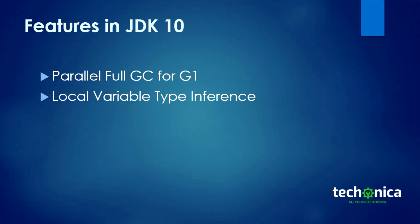A notable improvement in JDK 10 is local variable type inference. If you are familiar with other programming languages like Scala or even JavaScript, type inference is already there. In Java also it is now present. Type inference is the ability of the Java compiler to look at each method invocation. A smaller version of this was already present in Java.